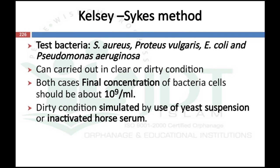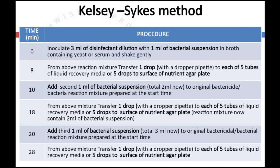Dirty conditions can be simulated using yeast suspension or inactivated host cells. The procedure is: at 0 minutes, inoculate 3 ml of disinfectant dilution with 1 ml of bacterial suspension in broth containing yeast or serum, then shake gently. At 8 minutes, take 1 drop each to 5 tubes of liquid recovery media using a dropper pipette, or 5 drops onto the surface of a nutrient agar plate. At 10 minutes, add 1 ml of bacterial suspension to the original reaction mixture, making a total of 2 ml of microbial suspension.